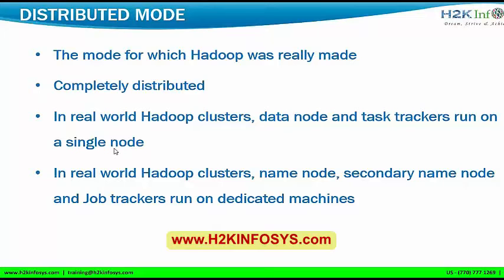The last one is distributed mode — the mode for which Hadoop was really made. No dependencies on each other. Everything runs on its own JVM and multiple threads can be executed at the same time, so completely distributed. In real world Hadoop clusters, data node and task trackers run on a single node. All remaining processes will run on independent machines. Name node, secondary name node, and job trackers run on dedicated machines.